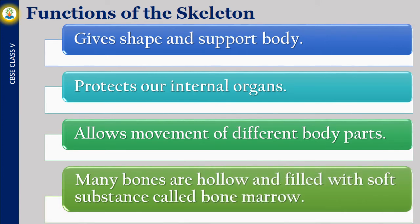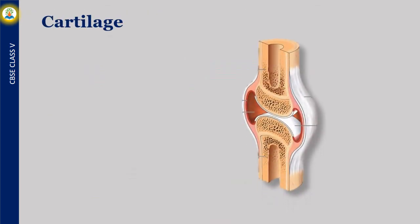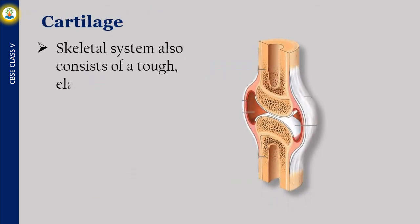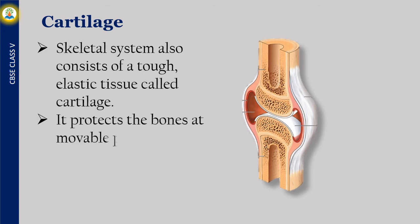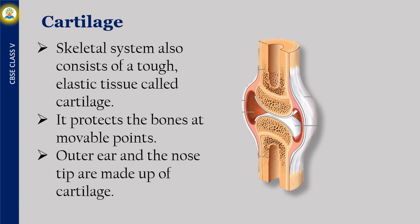The skeleton gives shape and supports the body, protects our internal organs, and allows movement of different body parts. Many bones are hollow and filled with a soft substance called bone marrow. The skeletal system also consists of a tough, elastic tissue called cartilage, which protects bones at movable points. The outer ear and nose tip are made up of cartilage.